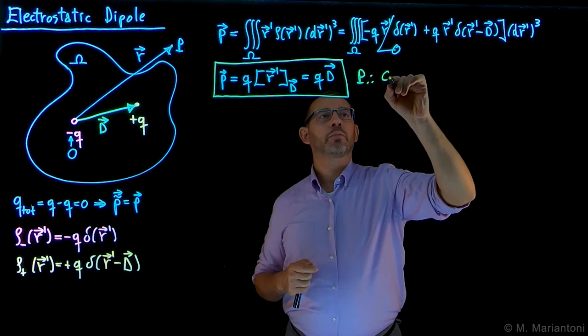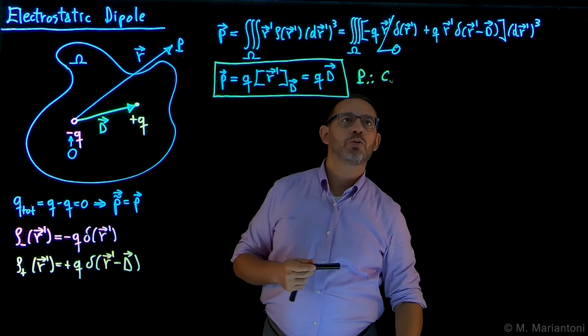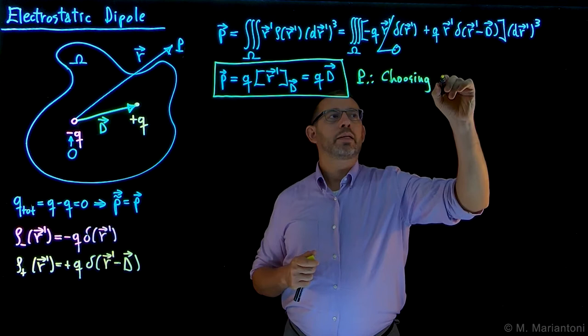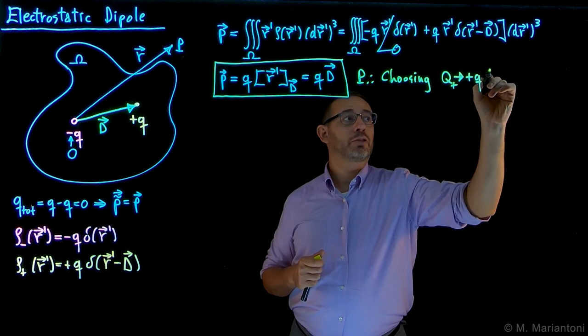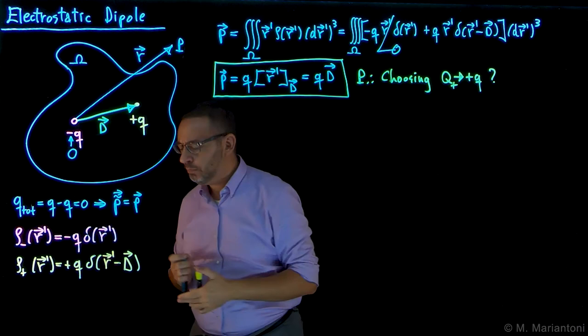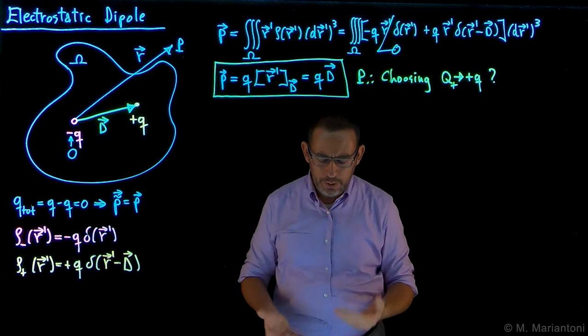In the Piazza forum, I want you to compute the same thing choosing a different origin — for example, choosing the position associated with plus q as the origin. Of course, you should find the same result with the same conventions.